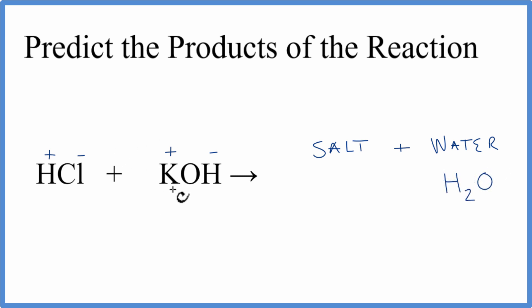So let's write H2O. And then the K, the potassium, the positive, will go with the negative, the chloride. That'll give us KCl.